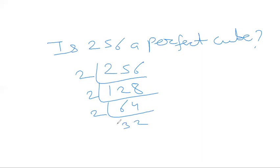2 into 256 is 128, 2 into 128 is 64, 2 into 64 is 32, 2 into 32 is 16, 2 into 16 is 8, 2 into 8 is 4, 2 into 4 is 2.